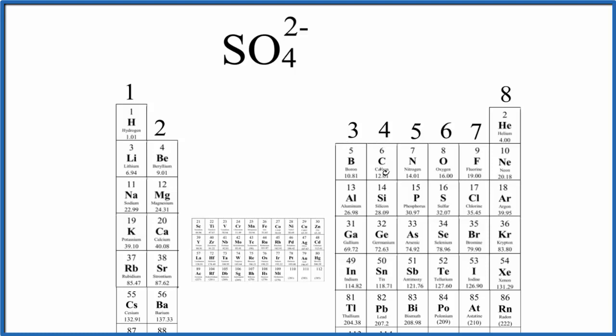Group 13 has 3, 14 has 4, and so on. The only real exception is helium. That's in group 18. All of these have 8, except helium. That has 2 valence electrons.